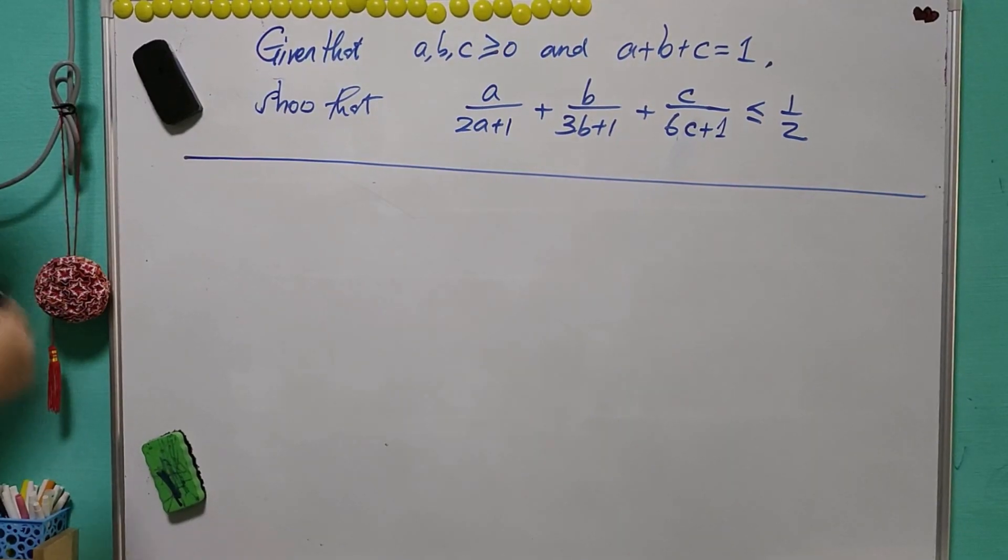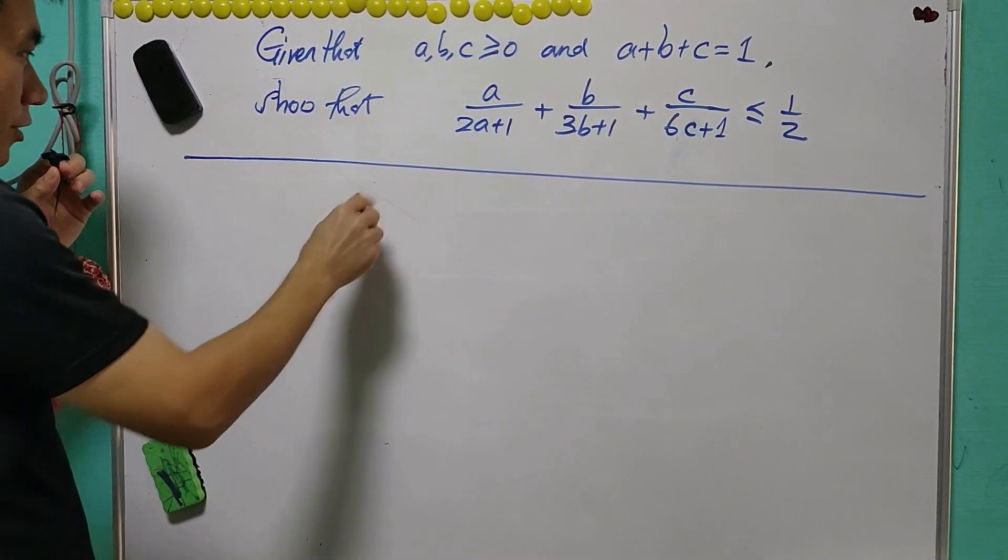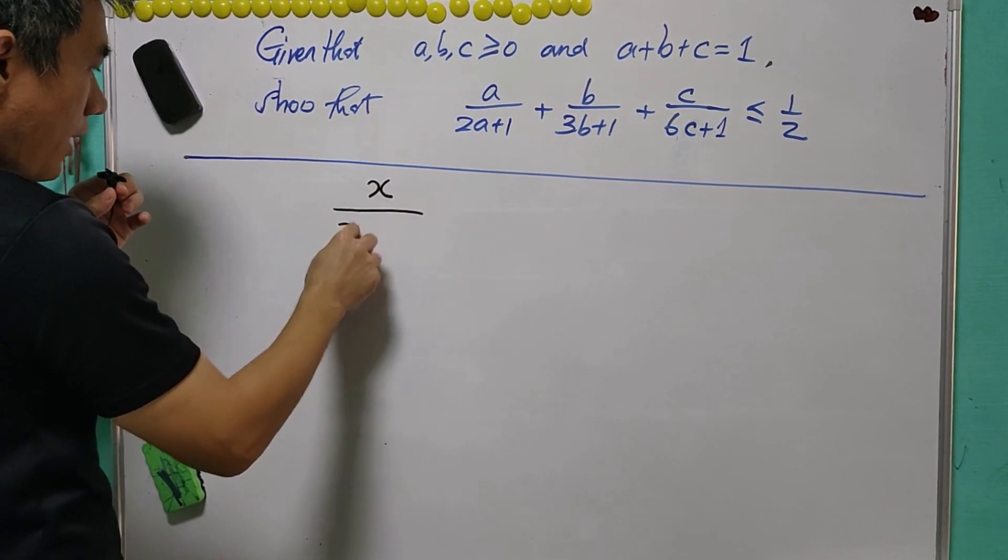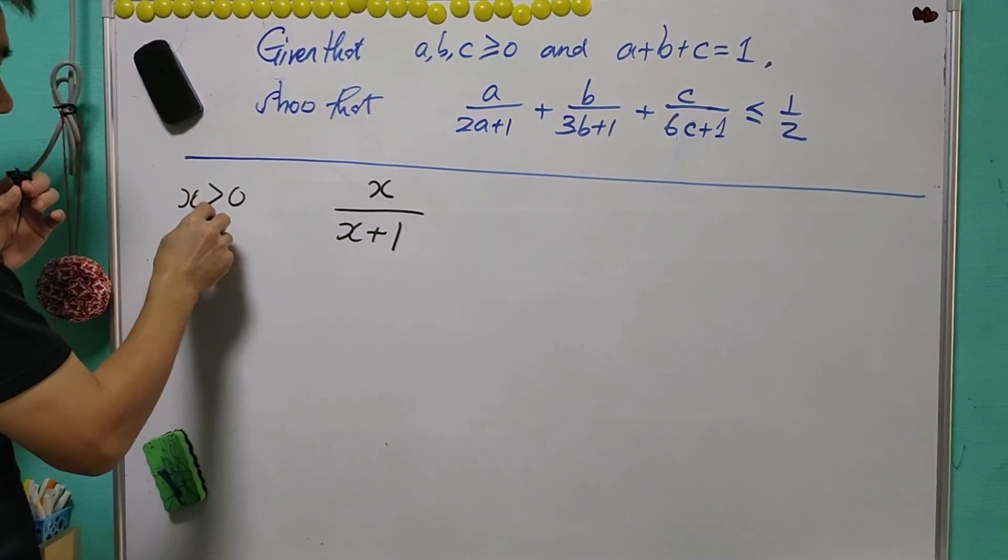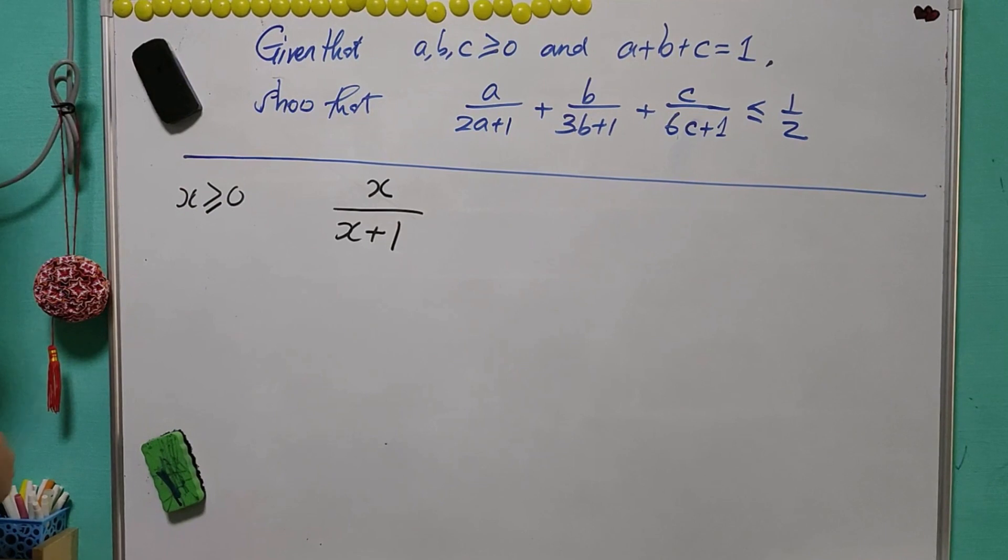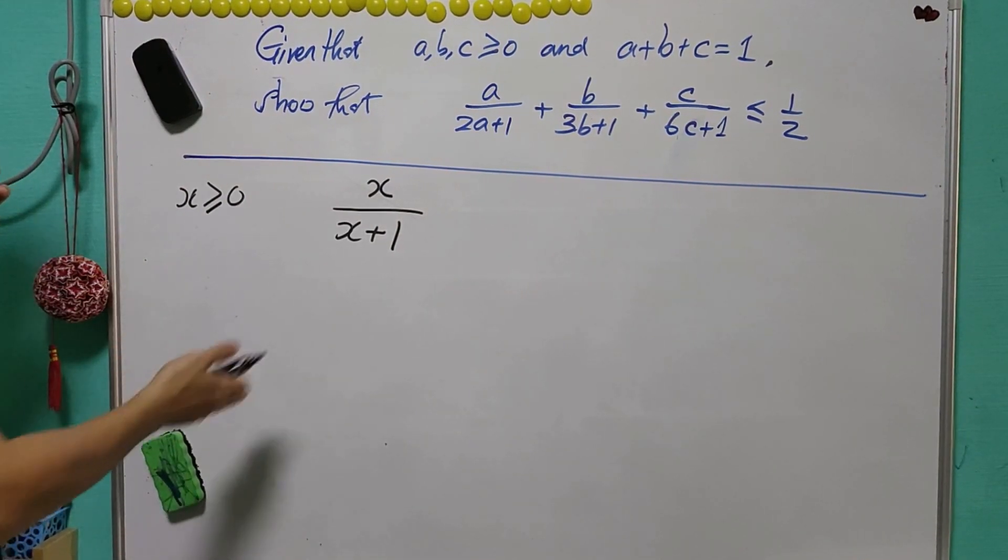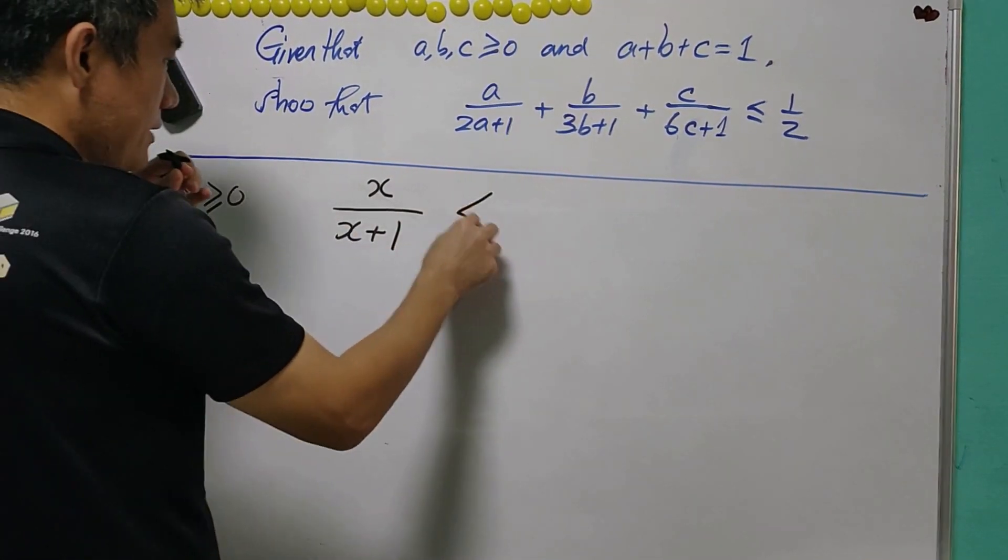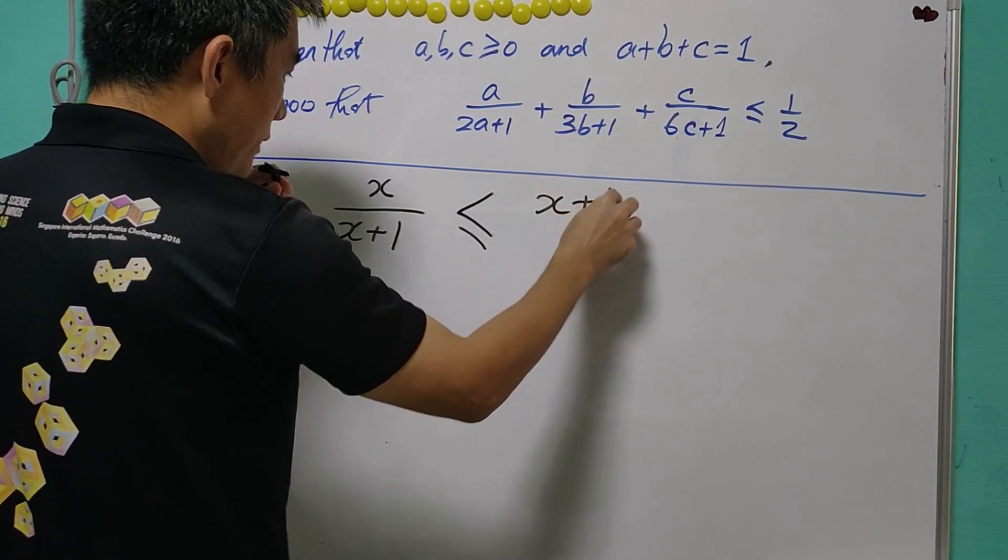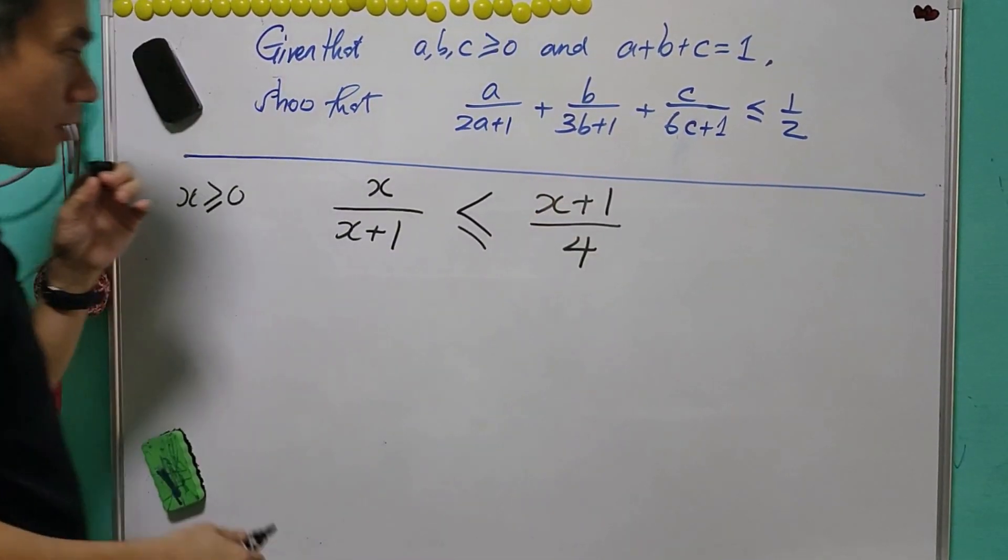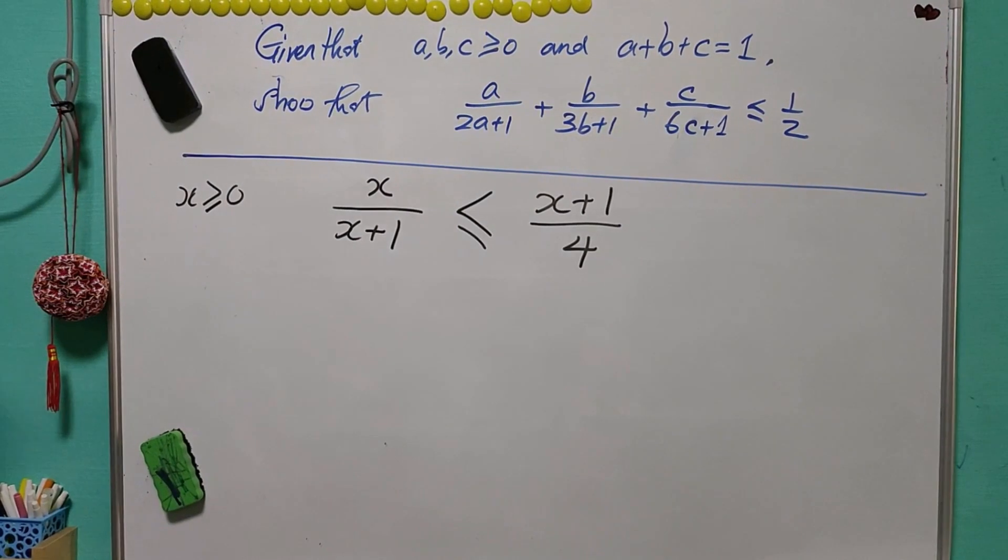First of all, we know that each of these terms are related to the form of X over X plus 1, where X is greater than or equal to 0. Then we know that this term will be less than or equal to X plus 1 over 4 because of AM-GM inequality.